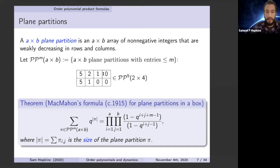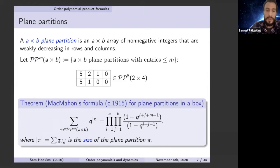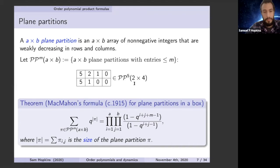Here is McMahon's generating function of plane partitions in a box — maybe one of the most celebrated formulas in enumerative and algebraic combinatorics. It's a formula for the number of elements in the set PP(m) of an a-by-b array, and it's even better than that: it's a q-analog, a generating function. If you sum over all plane partitions, q to the size of the partition, you get an explicit product formula. Taking the limit as q goes to 1 recovers a product formula for enumerating the set.